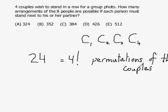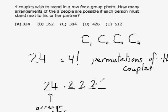But we're not finished. Each couple is going to have to make a decision. Who's going to stand on the right? So there are 24 ways to arrange the couples. But then, each couple will need to decide who's going to stand on the right, the man or the woman. So each couple has two ways to make that decision.